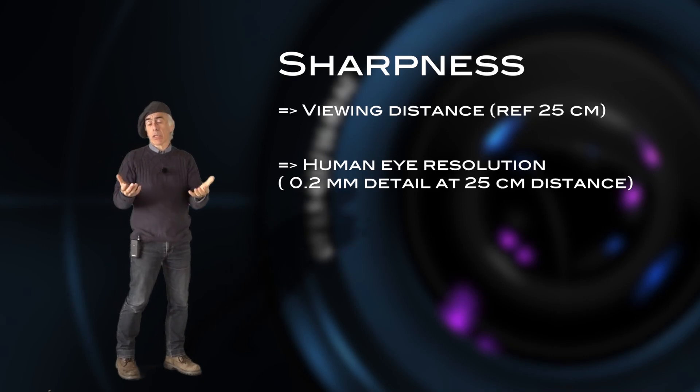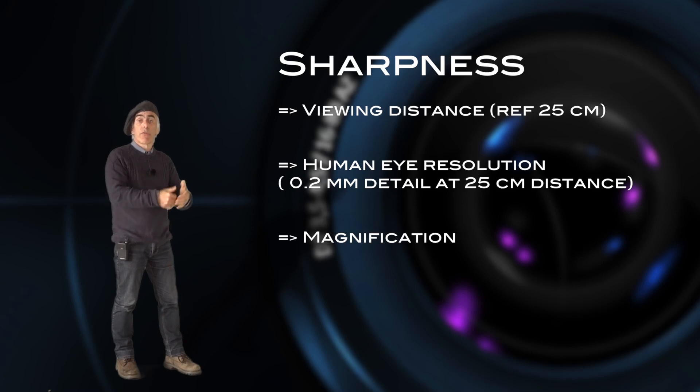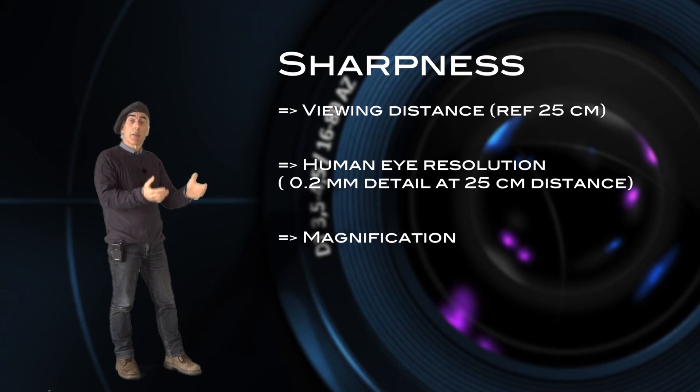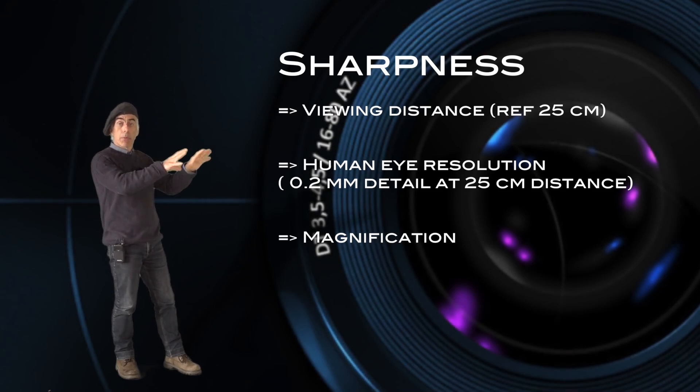Basically, the eye can distinguish five lines per millimeter, or any object which is around 0.2 millimeters at a distance of 25 centimeters. Of course, if you go further away, that is getting less. Then the last factor we need to talk about is the magnification: how many times did we multiply the sensor format onto the paper, onto the picture. These are the things we need to consider.